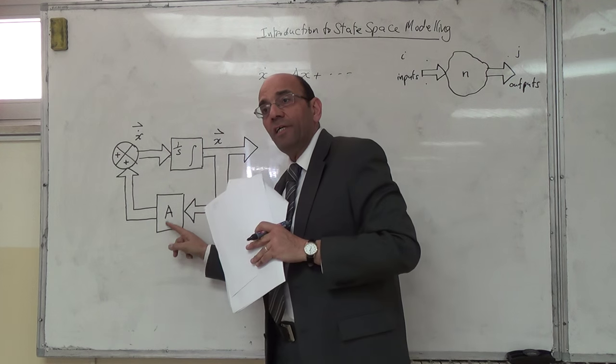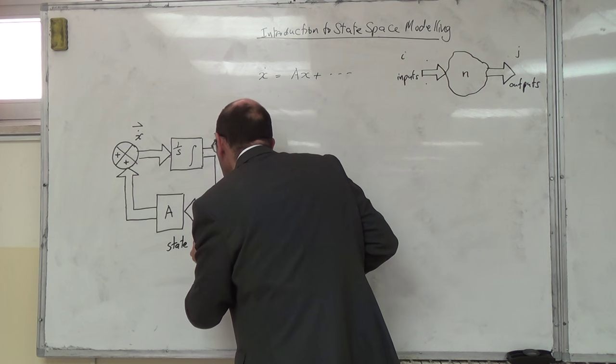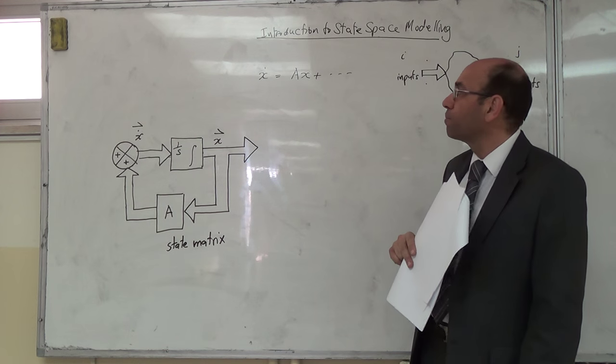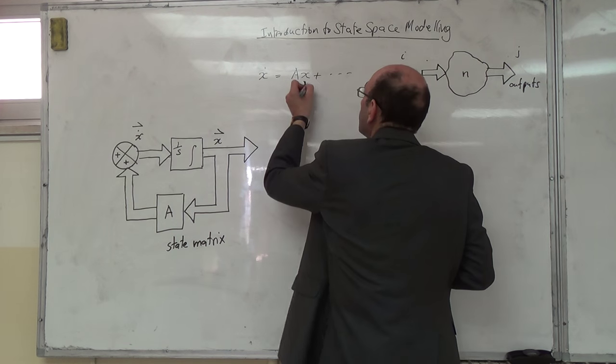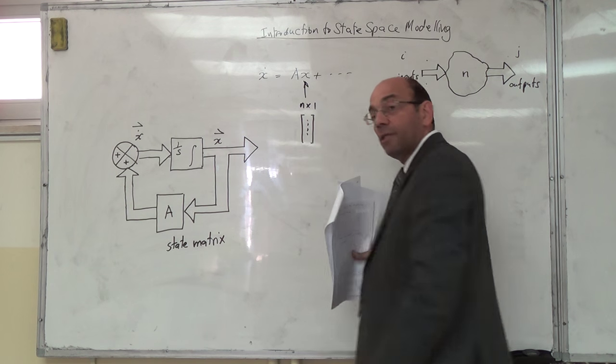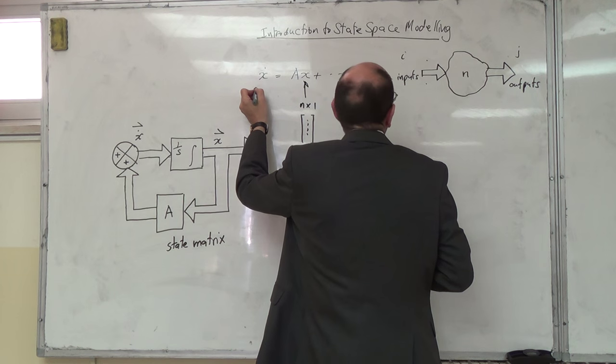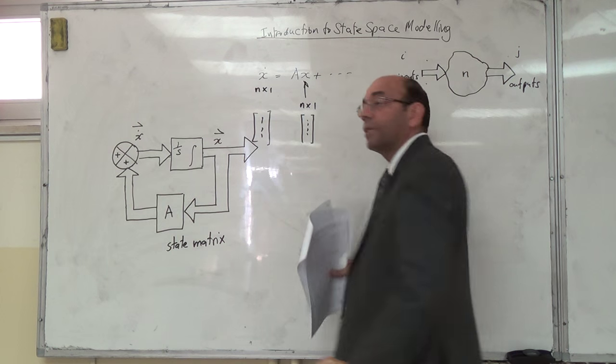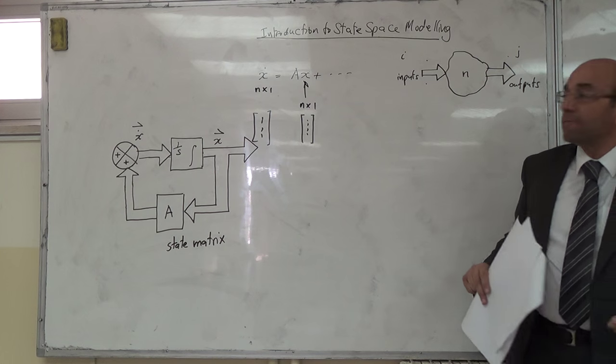هدول في بينهم coupling. ولذلك إذا ايه ايش هي؟ هاي state matrix. ايش الـ order تبع x؟ dimension تبع x؟ n by one. فهذه عندي n by one، يعني هيك رح يكون شكلها، فيها هون n، أجدما تسمى. x dot ايش dimension تبعها؟ إذا ايش لازم يكون dimension تبع A؟